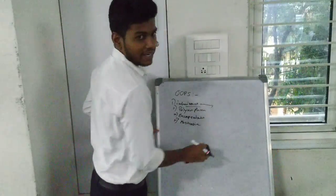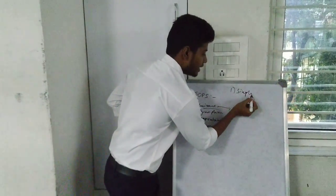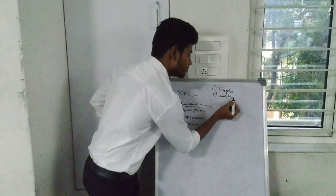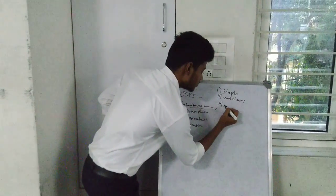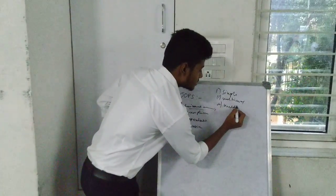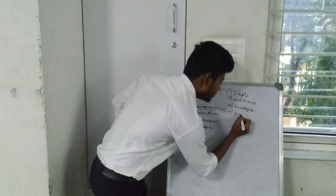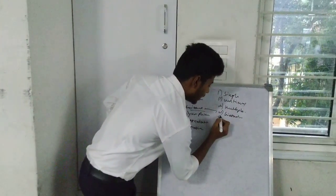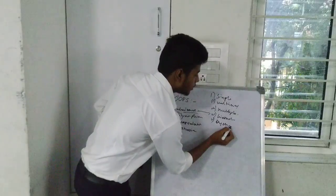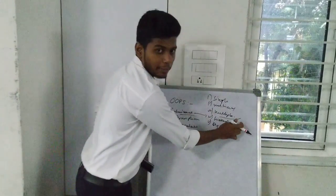We have two types. First, single inheritance. Multi-level inheritance. Multiple inheritance — where class B inherits from one object and then class B can inherit from type one as well. But in Java, we cannot support multiple inheritance due to ambiguity.